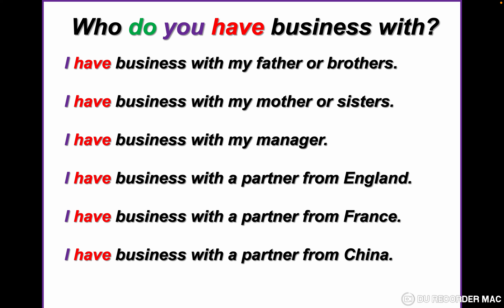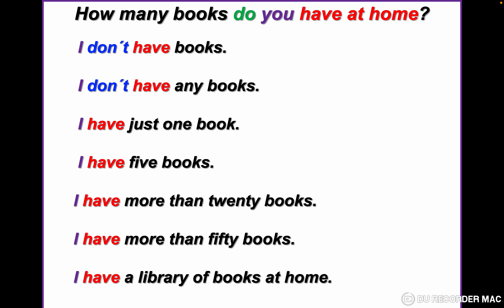Now we change to 'how many.' How many books do you have at home? Notice: with 'how many books,' we don't have 'how' plus auxiliary — this is an exception. 'How many' works as one unit and always requires a noun in the plural form, for example 'books.' So: how many books do you have at home?